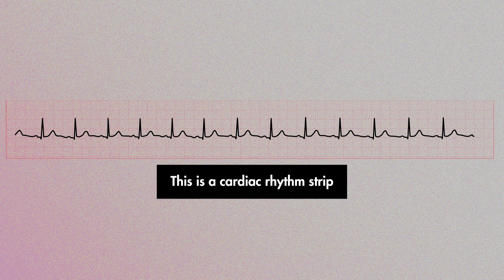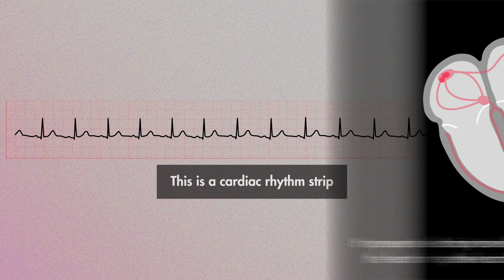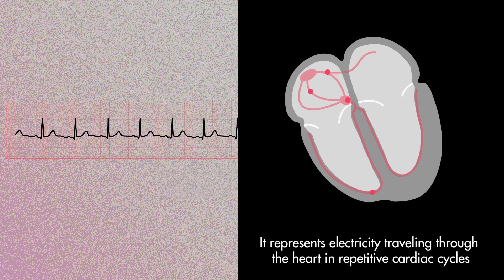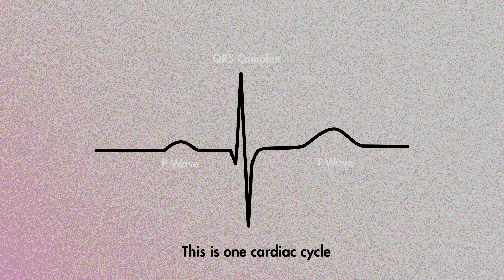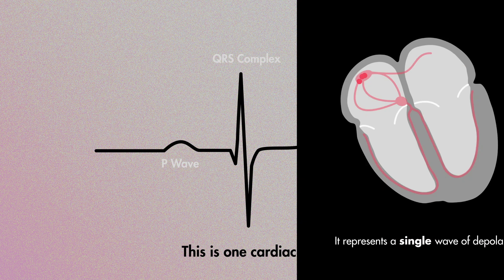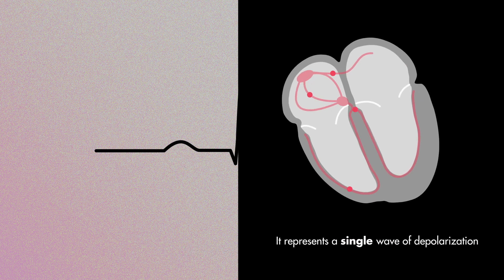This is a cardiac rhythm strip. It represents electricity traveling through the heart in repetitive cardiac cycles. This is one cardiac cycle, which represents a single wave of depolarization from the SA node to the ventricles.